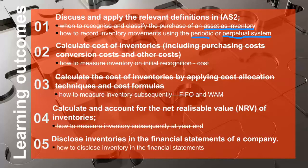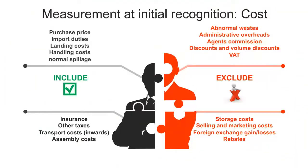Moving to objective two, we started off by speaking about purchase costs. We said purchase costs or initial costs are made up of three things: the purchase price, non-reclaimable or unreclaimable taxes, and inbound transport costs.